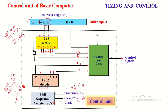For example, if the input values received from the instruction bits are all 0s — that is 0, 0, 0 — then it will activate the output line designated B0. And if the input values are 0, 0, 1, then it will activate the output line designated D0.